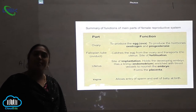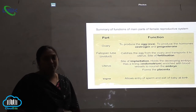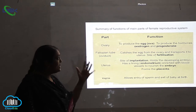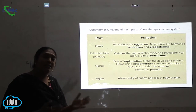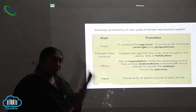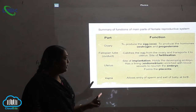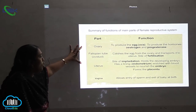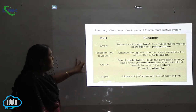We have seen the summary of the functions of the male reproductive system. Now let us see the summary and the functions of the main parts of the female reproductive system. These are all the parts of the female reproductive system.